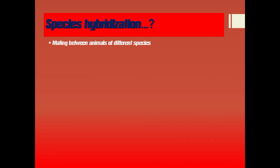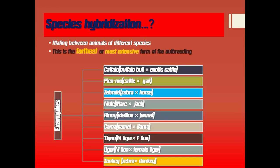Species hybridization is the last method of outbreeding. It refers to mating between animals of different species and is the farthest or most extensive form of outbreeding. Examples include: American Buffalo Bull mated with exotic cattle; Pinu — cattle mated with yak; Zebroid obtained by mating zebra with horse; Mule by mare and jack; Hinny by stallion mating with jenny; Kama produced by camel mated with llama; Tigon produced by male tiger mated with female lion; Liger obtained by male lion mated with female tiger; and Zonkey produced by zebra mated with donkey.